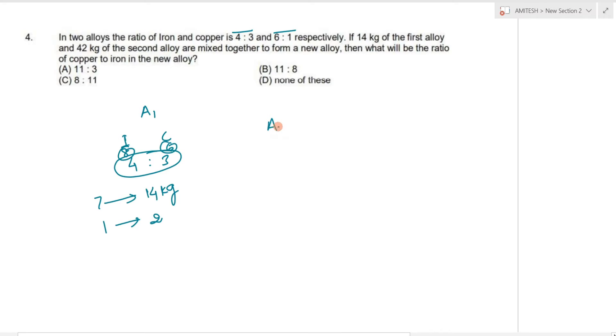Second, what will be the ratio of iron? Second alloy in iron and copper is 6 is to 1. So here total quantity is 42 kg. It means here 6 plus 1. 7 unit value is 42, then 1 unit value is 6. That means iron value is 6.